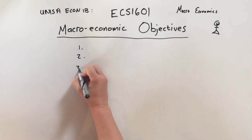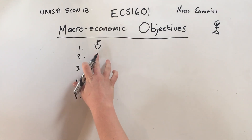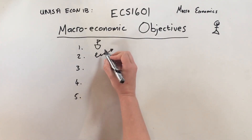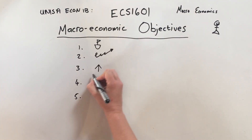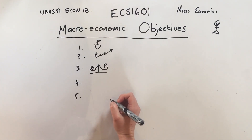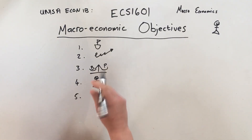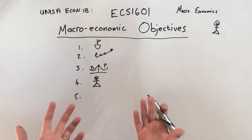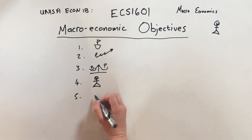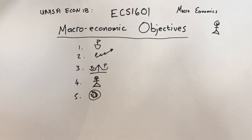There are five macroeconomic objectives that the government aims to achieve. The first one is price stability — there's a little boat in the water and we want it to be stable. The next one is economic growth. Then balance of payments — I use a little scale and it has to balance. Number four is equitable distribution of income — women generally earn less than men in exactly the same job, which isn't fair. Number five is full employment — we want everybody to have a job.